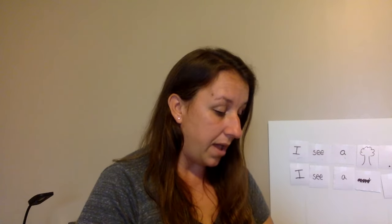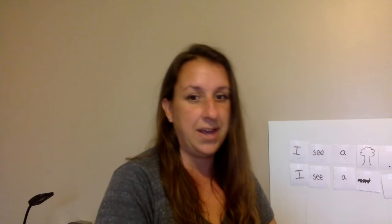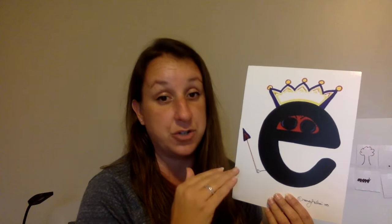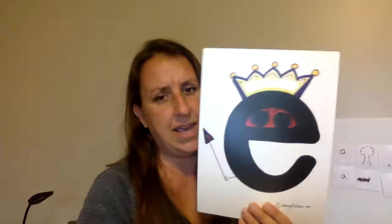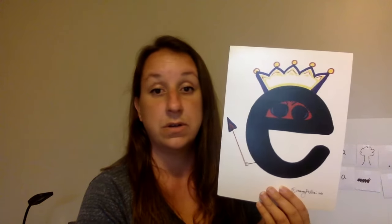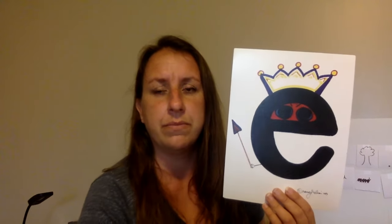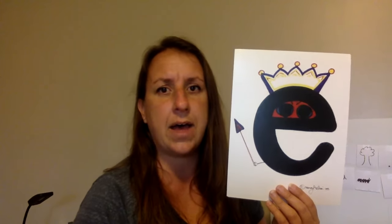Alright, so I'm going to introduce you to King Ed. Everybody say hello, King Ed. Yes, this is King Ed. We've already met his brother, just regular Ed — letter E. E says 'eh' like 'ed' and 'eh-eh-eg.' And this is King Ed. He doesn't really make any sound in words. He's just there doing what kings do — bossing people around. He's the leader.